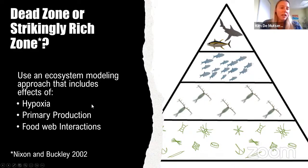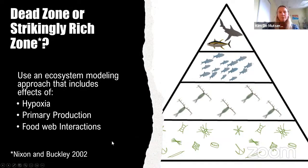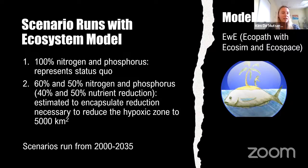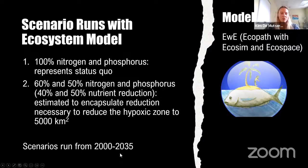To figure that out, an ecosystem modeling approach was used that includes effects of hypoxia, but also primary production and food web interactions that can reveal what happens if we reduce that primary production. The modeling tool is Ecopath with Ecosim and Ecospace. We ran a scenario keeping nutrient loading at 100% representing the status quo, then a 40% and a 50% nutrient reduction scenario — leaving 60% and 50% of nitrogen and phosphorus — because that is estimated to encapsulate the reduction necessary to reduce the hypoxic zone to 5,000 km². Those scenarios were run from 2000 to 2035.